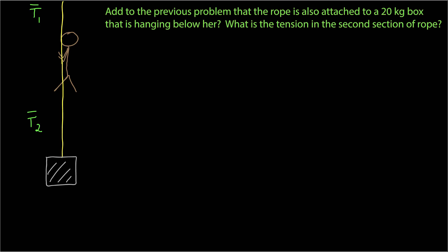I want to apply physics to solve this problem, and the physics I'm going to use is Newton's second law. Newton's second law only deals with one object. I have two objects here but I can't deal with both at the same time — I have to choose just one. So my first step is to isolate one object of mass m, and I've identified the mass as m sub a, using a subscript a for Alice to distinguish it from the mass of the box.